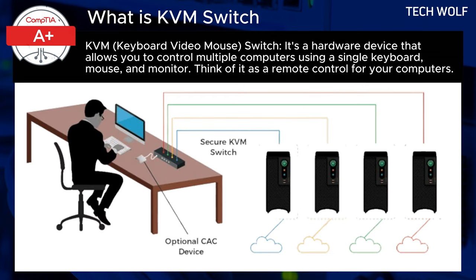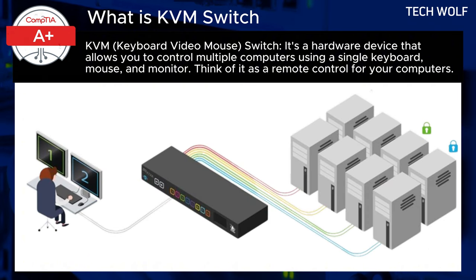Here are some examples. With multiple workstations: if you have multiple computers on a single desk, a KVM switch can help you manage them all with a single set of peripherals — keyboard, video, and mouse. Another example is server rooms, where KVM switches are commonly used to allow an administrator to control multiple servers from a single location.